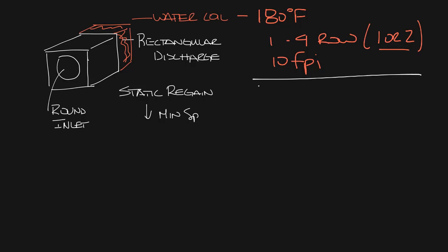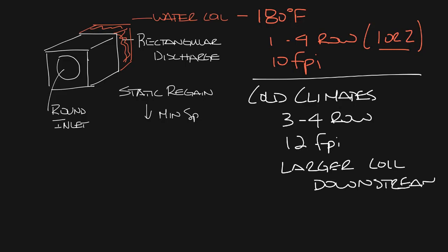So in colder climates like maybe Alaska and Canada the coils lacked enough fin area to meet the heating requirement. So what you had to do to meet your heat requirement was to go to three or four row coils or use twelve fins per inch, transition up to a larger coil downstream of the unit or supply the next larger size VAV box and use an adapter for the smaller airflow sensor.